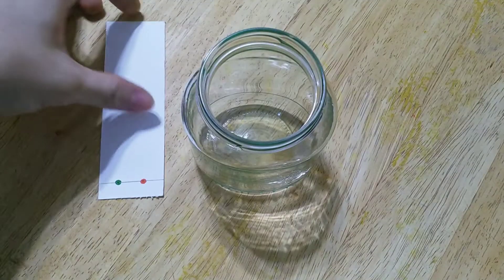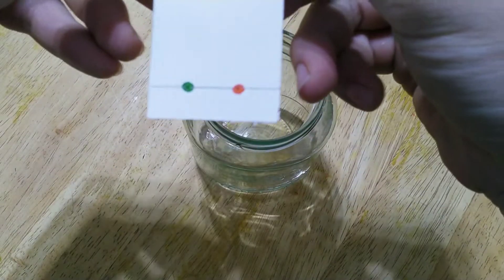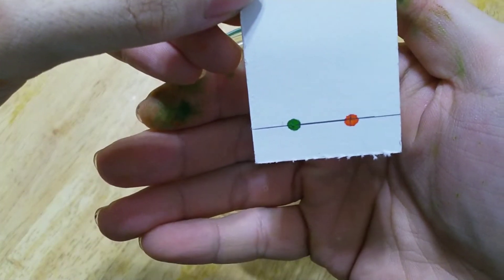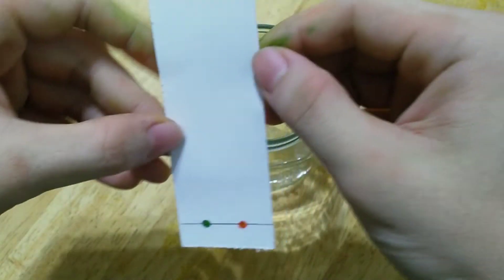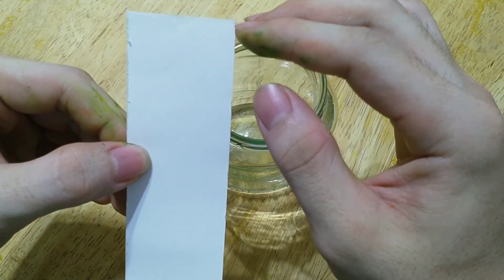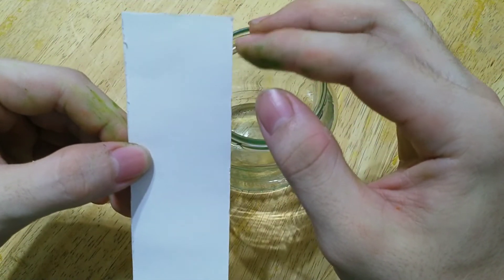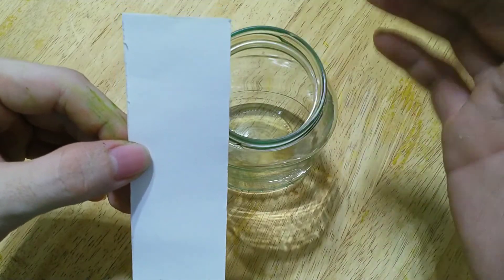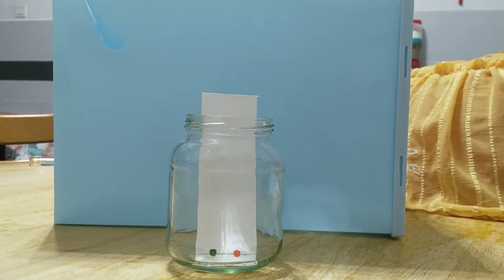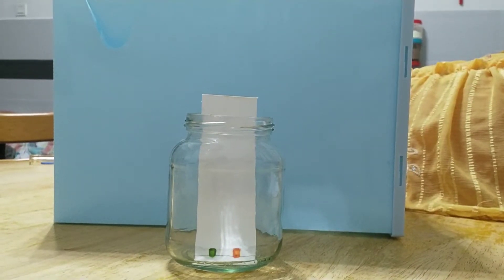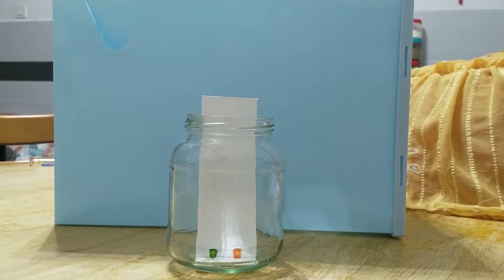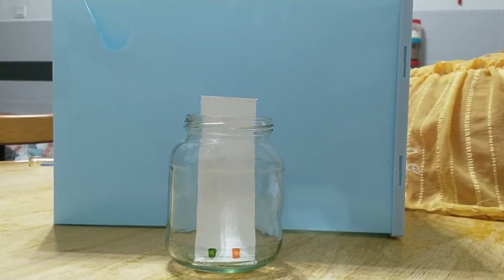After 3 minutes, we can see the color on the TLC plate is completely dry. And remember, we don't want the mobile phase to more than 1cm from the above of the TLC plate. So now we can run the TLC experiment. I put a blue color box behind the glass jar so you can see the movement of the pigment and the mobile phase easily.